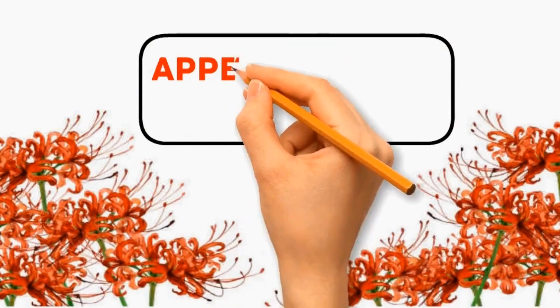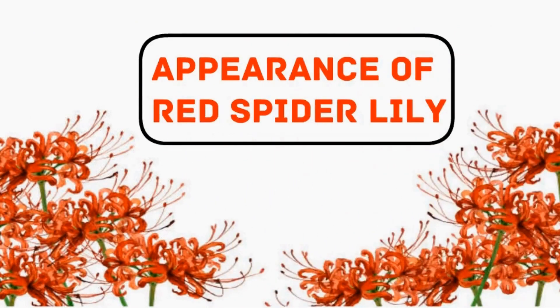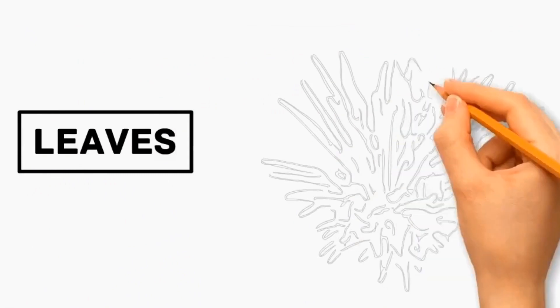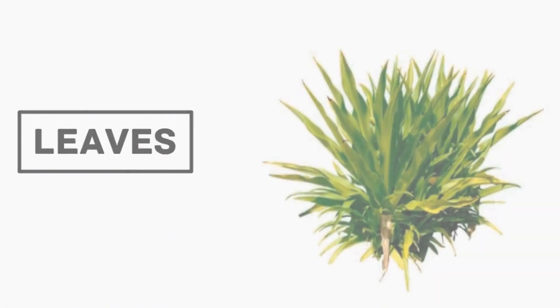Let's see the appearance of Red Spider Lily. Number one: Leaves. It has dark green color, strap-like leaves, emerging from the ground before the flowers appear.